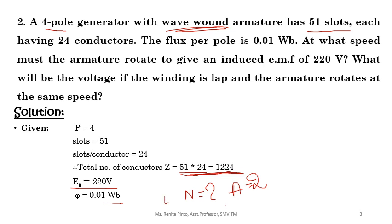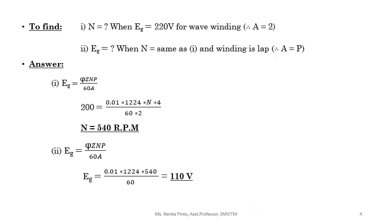There is another question: what will be the voltage if the winding is lap and the armature rotates at the same speed? When calculating the second question, the same data remains. Since they say the armature rotates at the same speed, you can take the N calculated in question 1 as the value for question 2.